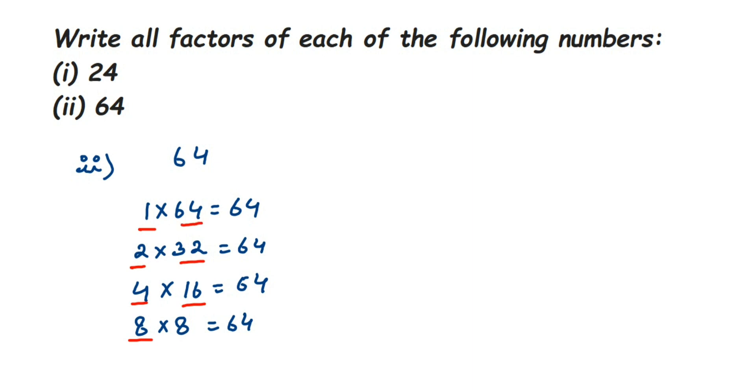So let me just conclude here. 8 is repeating two times, but just write down the factor 8 only once. Therefore, factors of 64 are: first one is 1, then 2, then 4, then 8, then 16, then 32, and the last one is 64 itself.